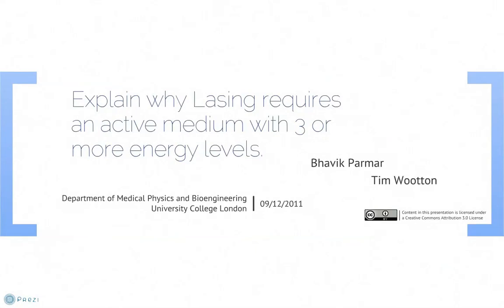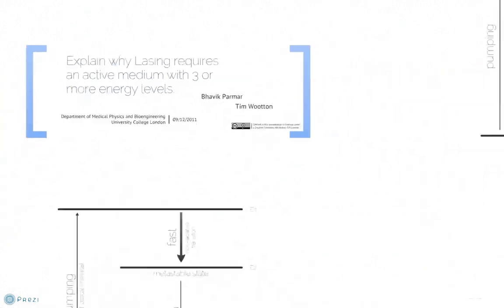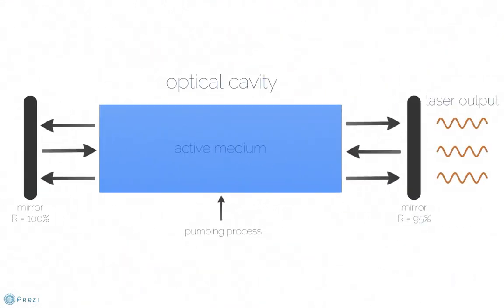Hello and welcome. This is a short video tutorial to explain why lasing requires an active medium with three or more energy levels, created by Tim Wooten and Barbit Palmer. This is a diagram illustrating the optical cavity for a laser, showing the active medium and mirrors that aid the amplification process, resulting in the laser output beam.